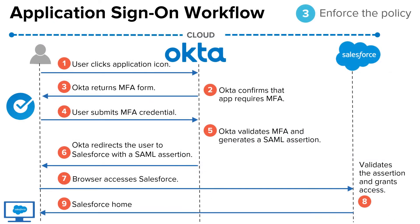Application-level sign-on policies can be triggered through both identity provider-initiated flow or service provider-initiated flow — at any point application access is attempted after Okta authenticates the user. The application-level sign-on policy will then be evaluated within the Okta authentication transaction model. So even if your users attempt to initiate application access from the application itself, assuming it supports service provider-initiated SAML flow, your application-level sign-on policies in Okta will still be evaluated and applied accordingly.